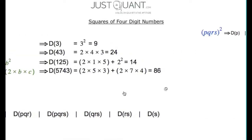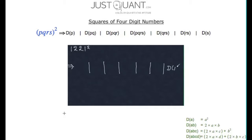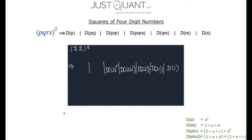Let us now consider an example. Take 1221 squared. Using our duplex methodology, we know that the square will have 7 parts. The right-most part will be duplex of 1. The next part will be duplex of 21. The one after that will be duplex of 221. The middle part will be duplex of 1221. The next part will be duplex of 122. The one after that will be duplex of 12. And finally, the left-most part will be duplex of 1.